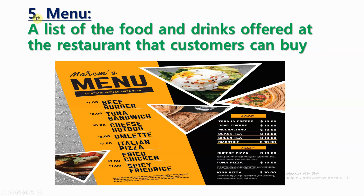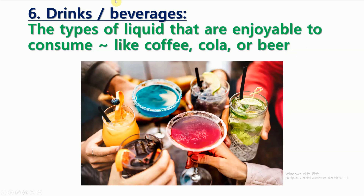Number 5: Menu. A list of the food and drinks offered at the restaurant that customers can buy. Number 6: Drinks, or beverages. The types of liquid that are enjoyable to consume, like coffee, cola, or beer.